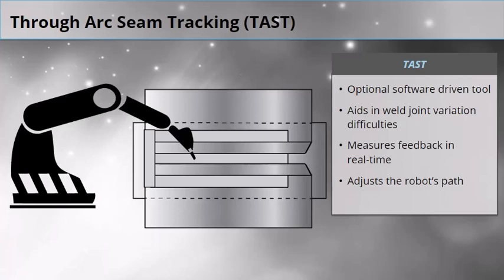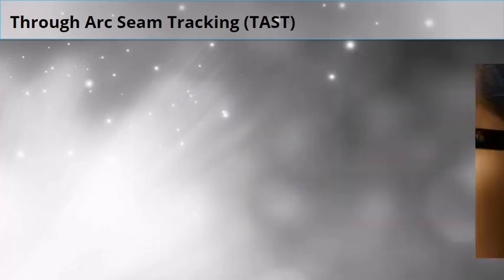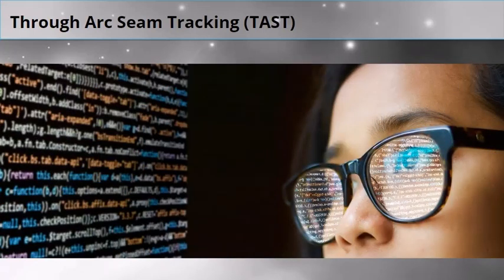Because some weld joints can be very problematic, TAST is a problem solving option to help you maintain consistency. As a robot programmer, you need to understand the options available when encountering part location issues.